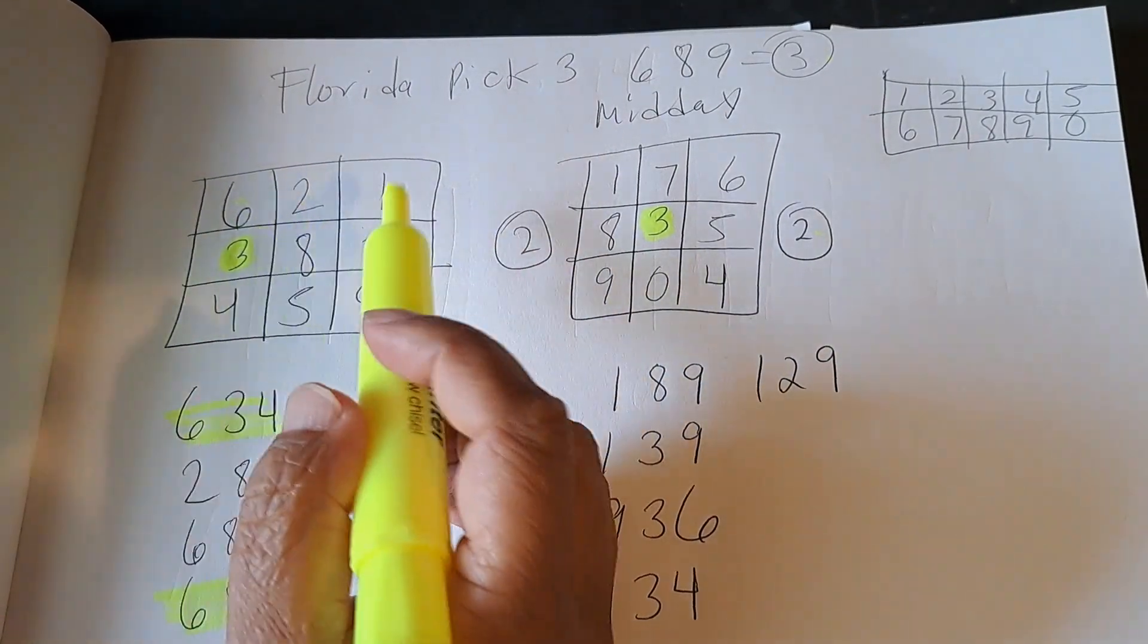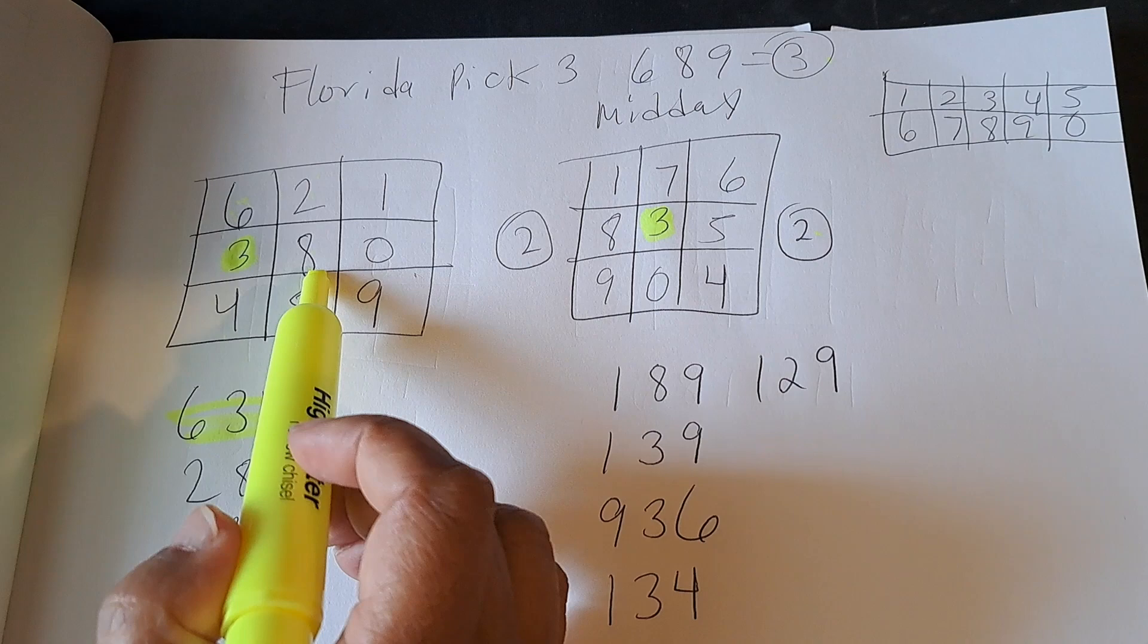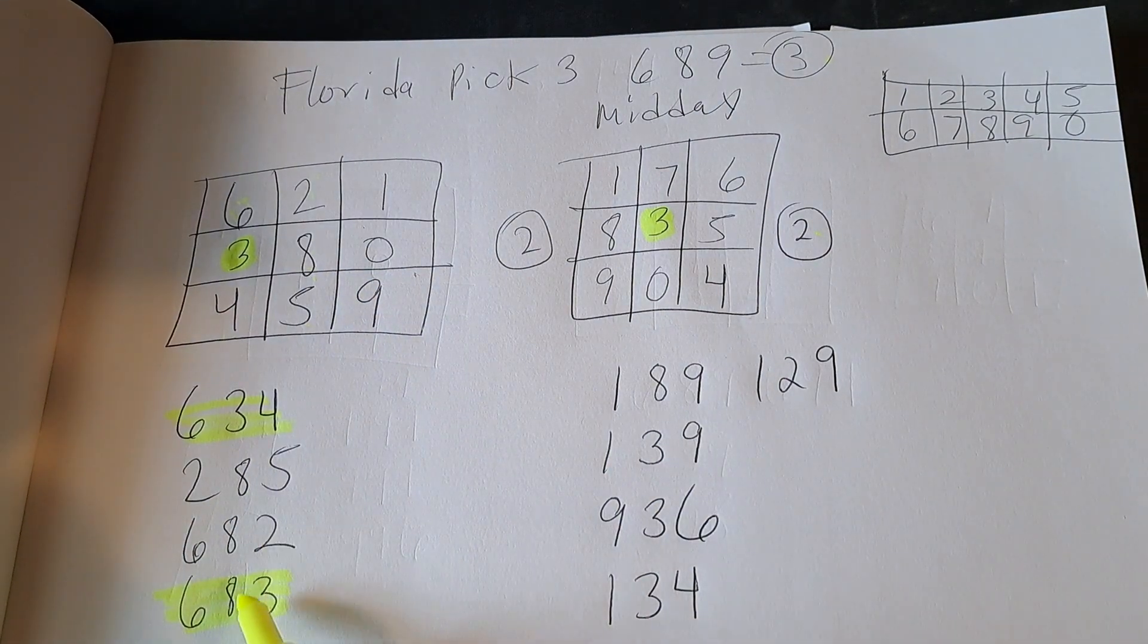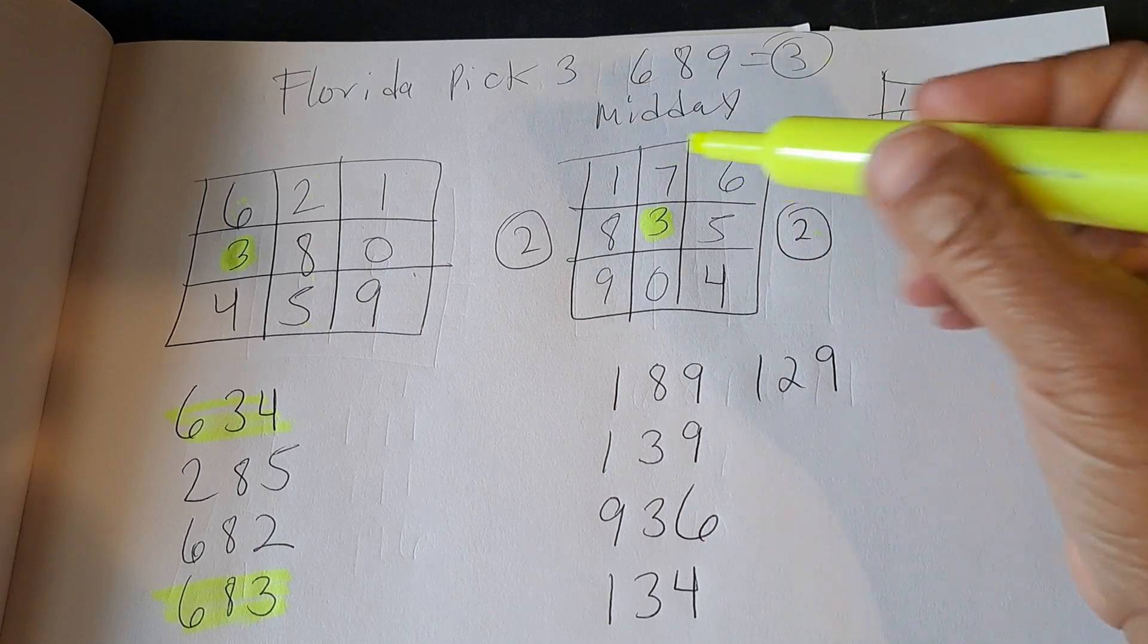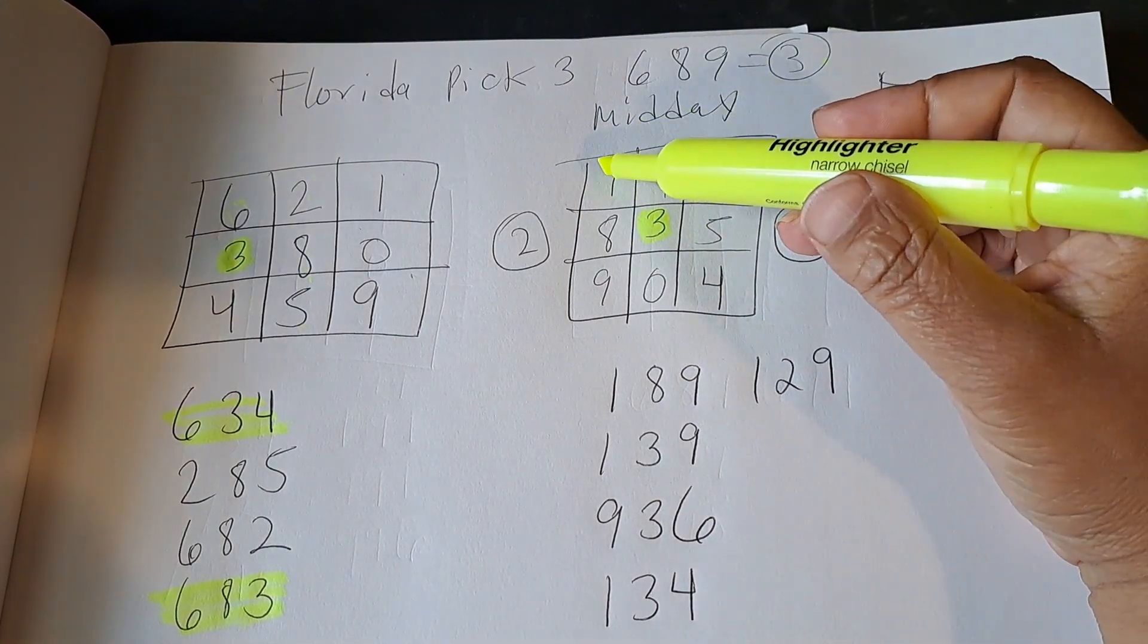If you want to play by the hit sum or you could play by the pairs. So these are two pairs, 683 and 682 from the 689 pair.